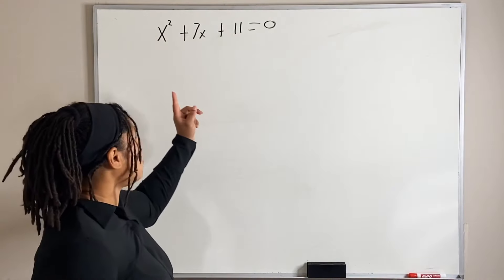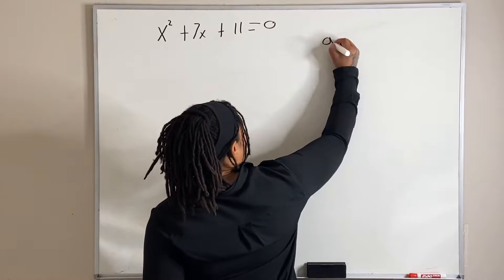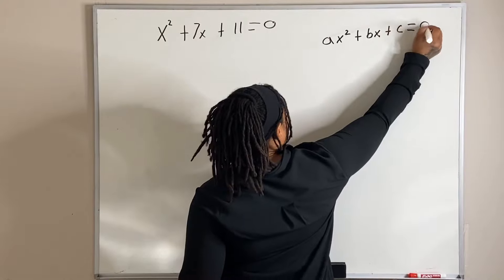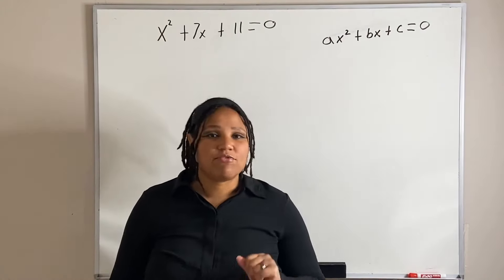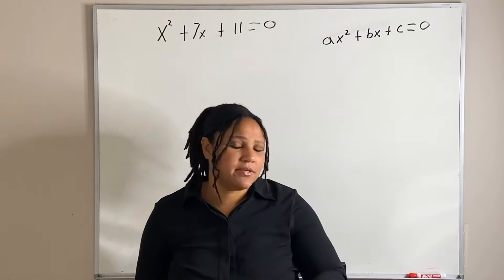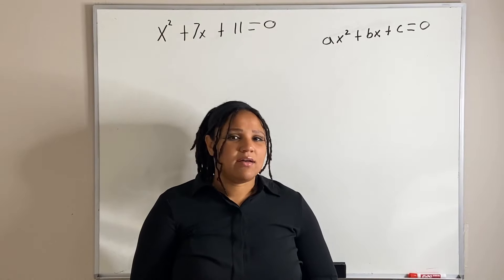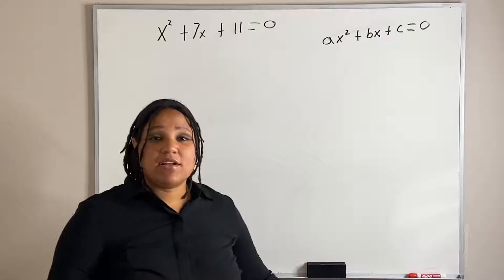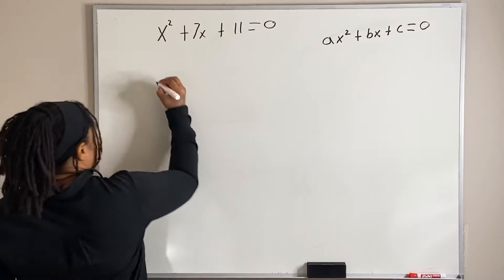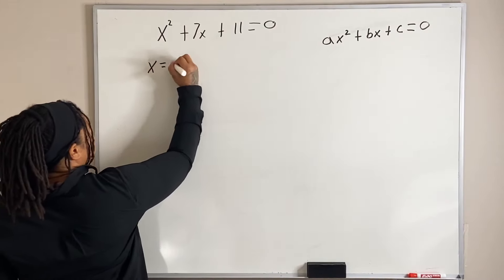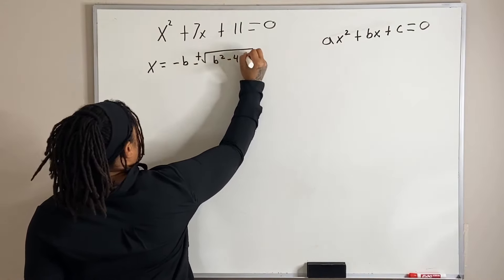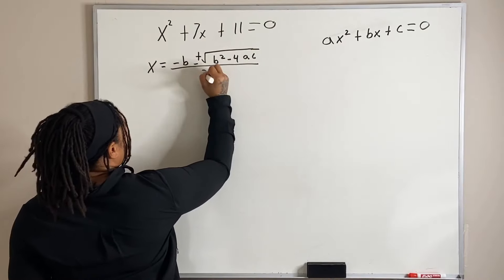Our equation is of the form ax² + bx + c = 0. The quadratic formula — which you can memorize, and I will also do another video on how to prove it — is: x equals negative b, plus or minus the square root of b squared minus 4ac, all over 2a.